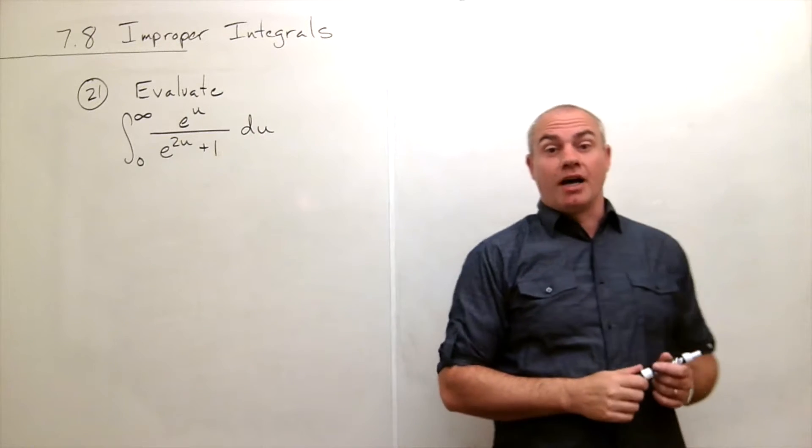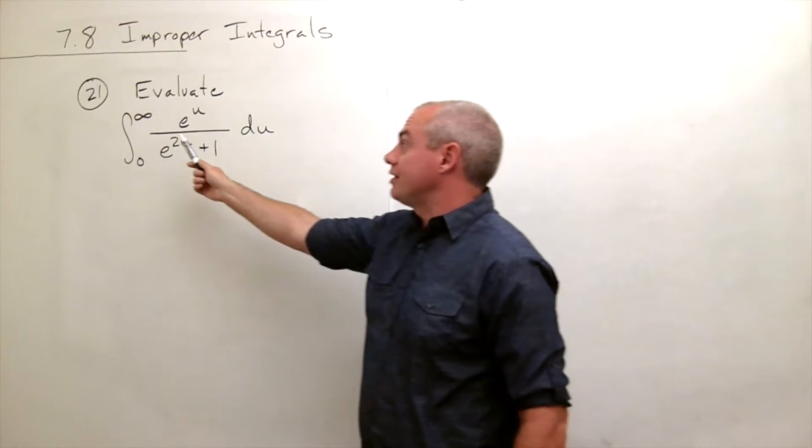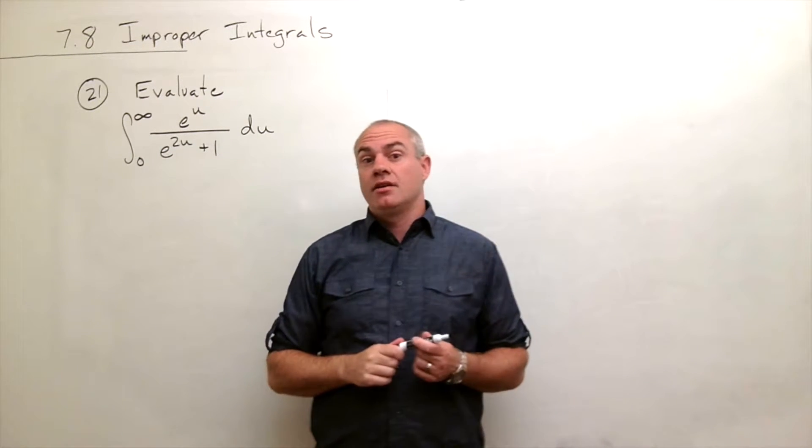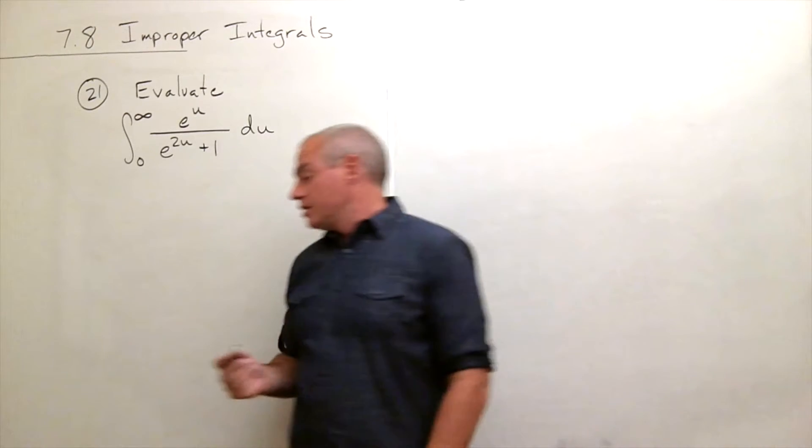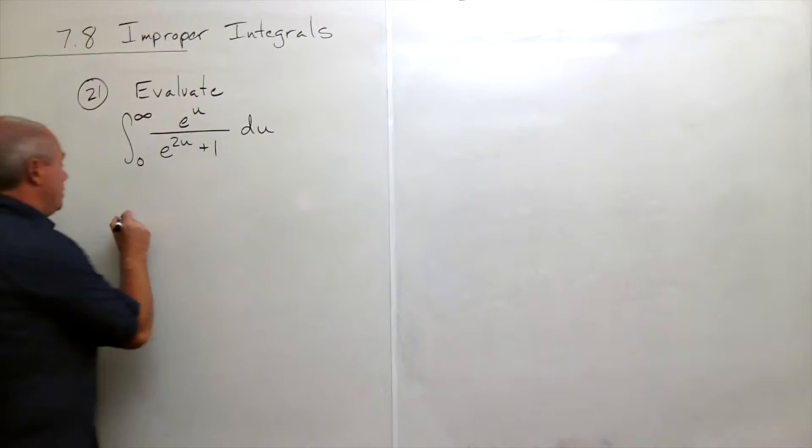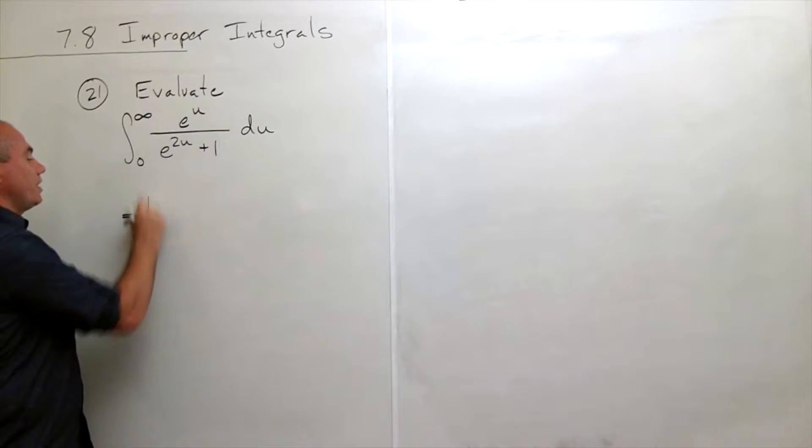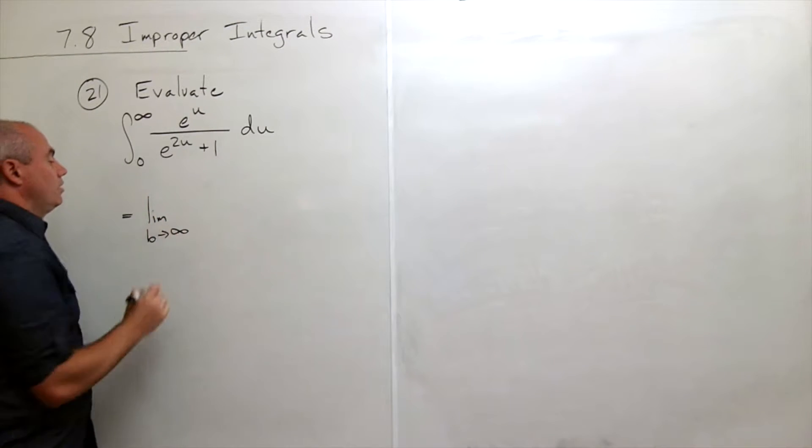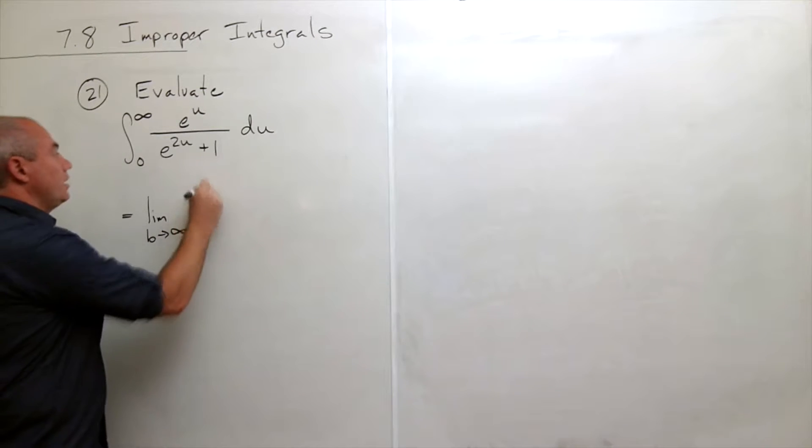Alright, it's easy to see right off the bat that this is an improper integral so we should write this integral as a limit. So let's rewrite. This integral is the same thing as writing the limit as b goes to infinity of the integral from zero to b of e to the u divided by e to the 2u.